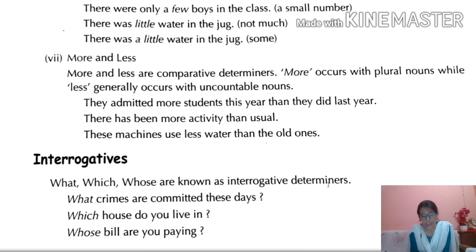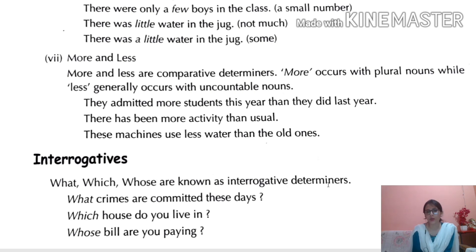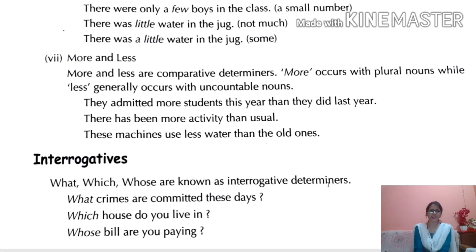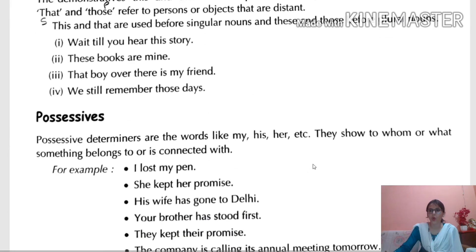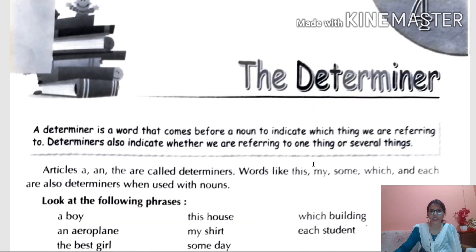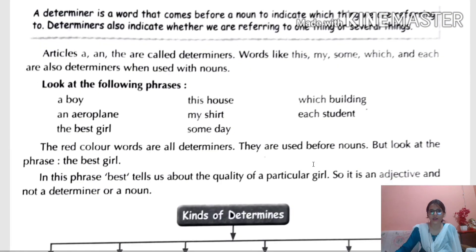The last one is Interrogative Determiners — an easy one. 'What,' 'which,' and 'whose' are known as interrogative determiners. Examples: 'What crimes are committed these days?' 'Which house do you live in?' 'Whose bill are you paying?' All these words are interrogative determiners.